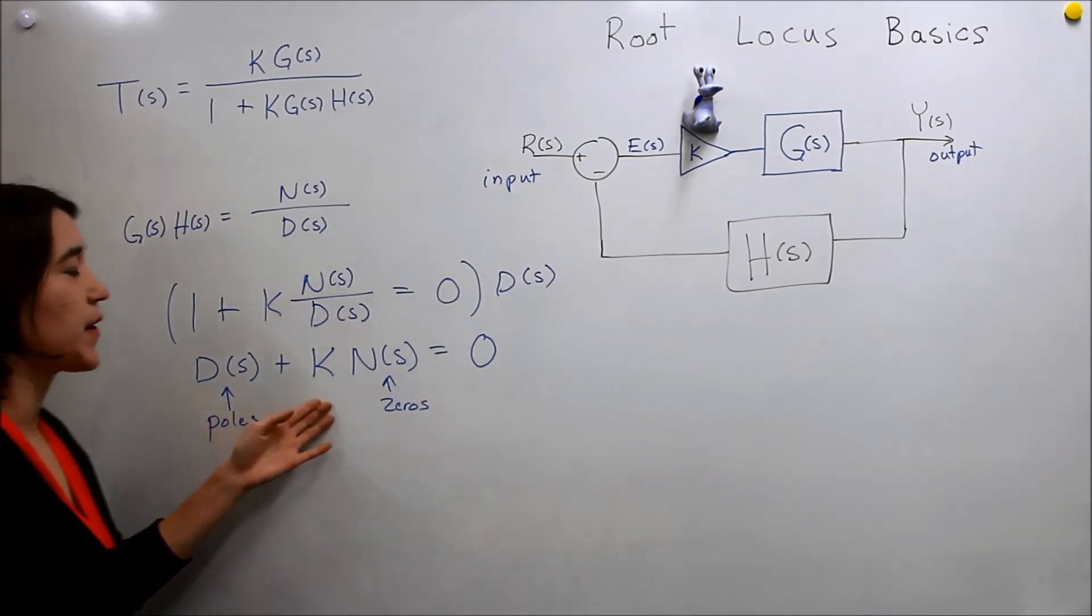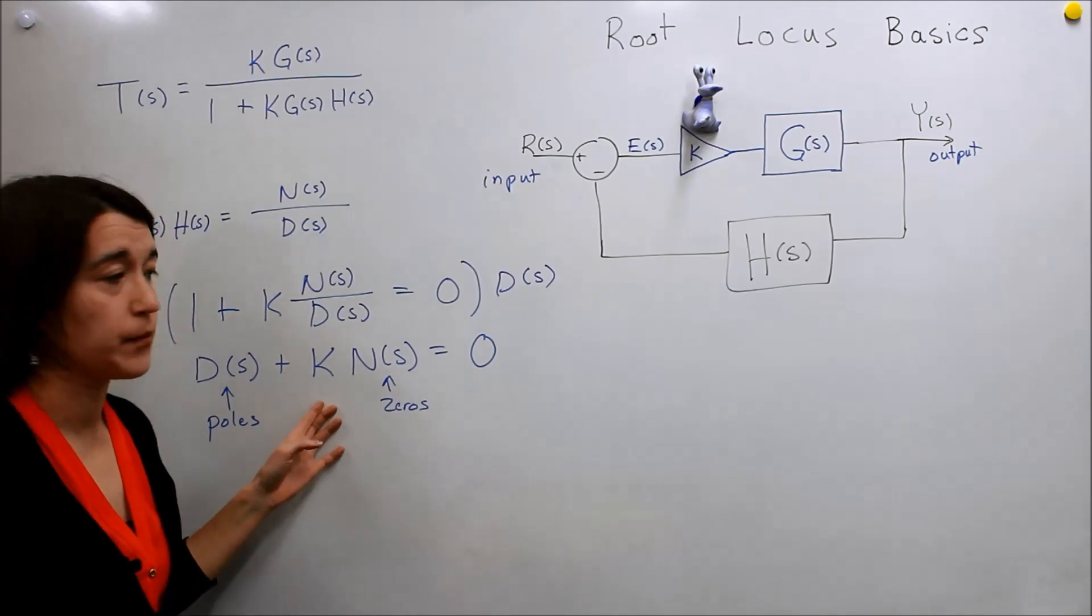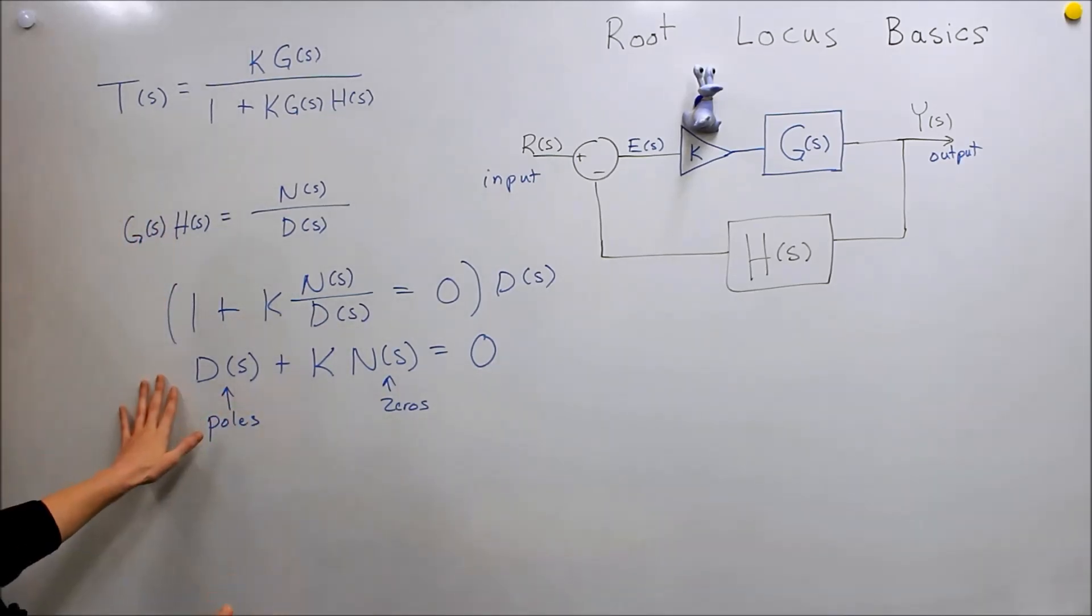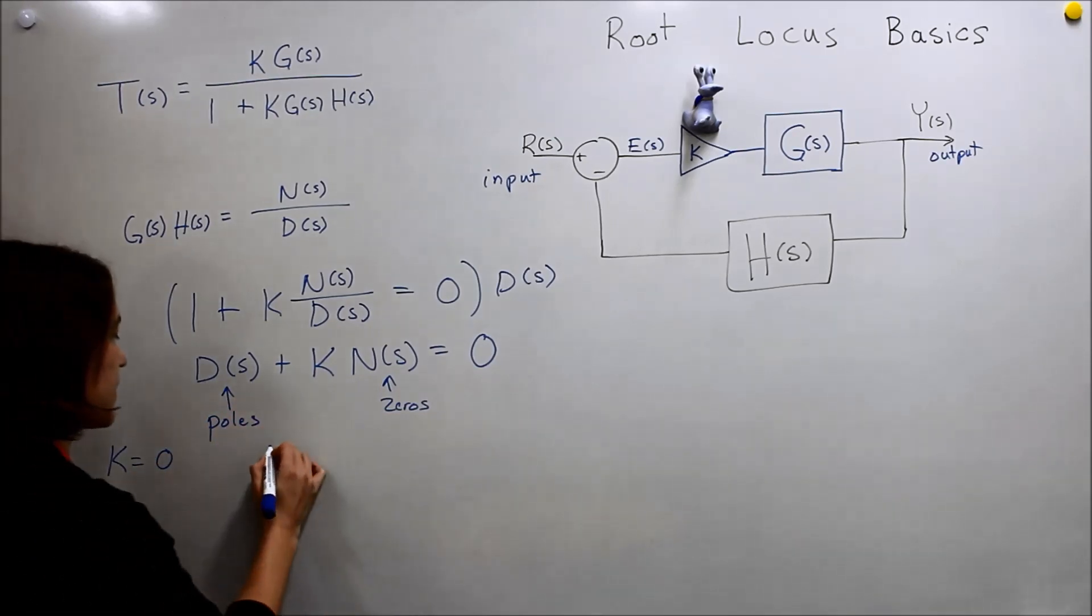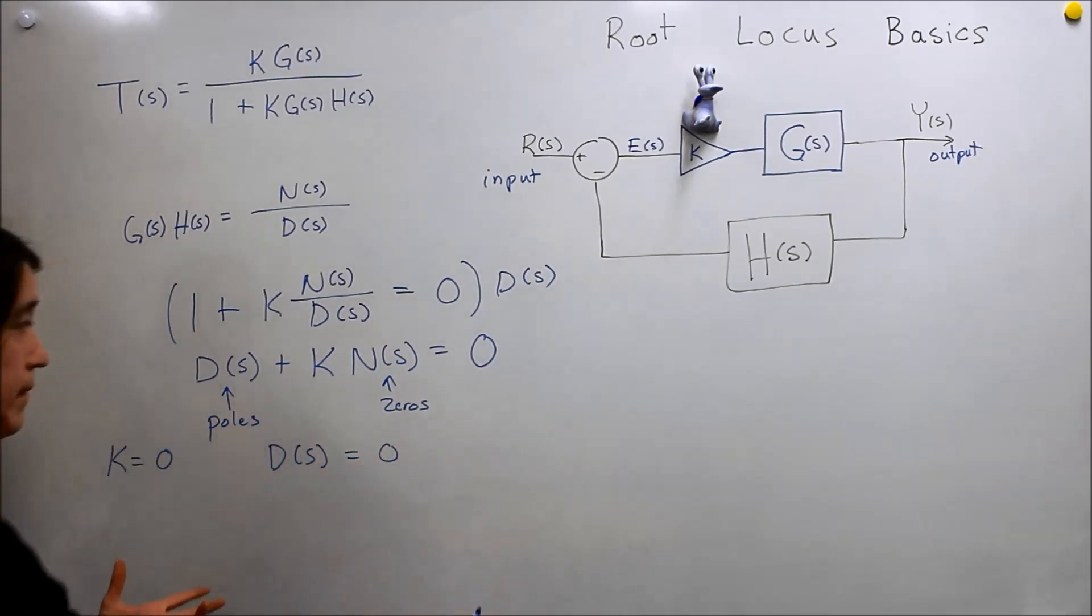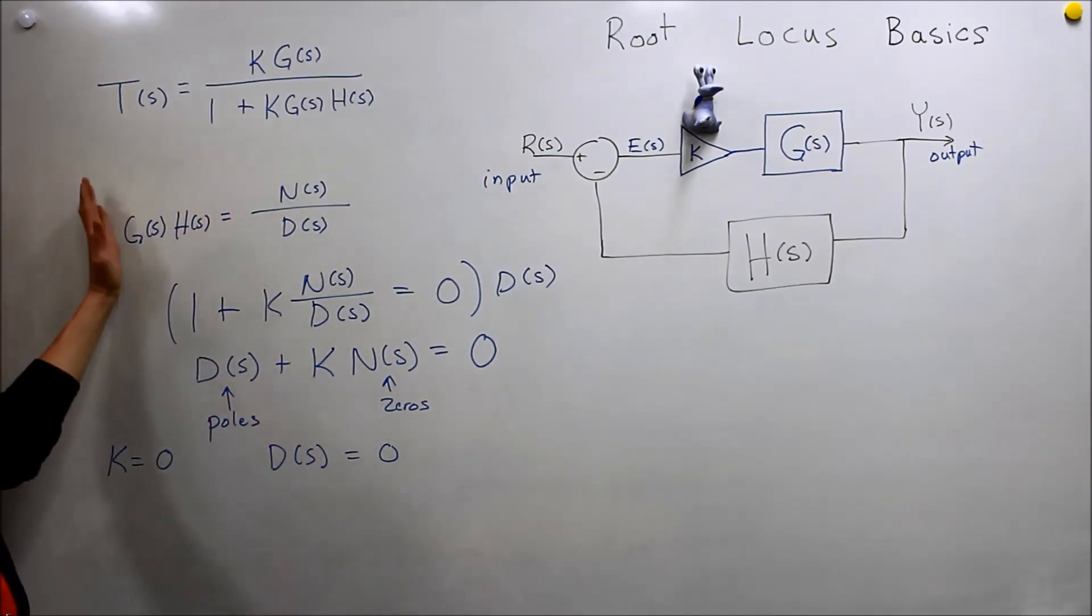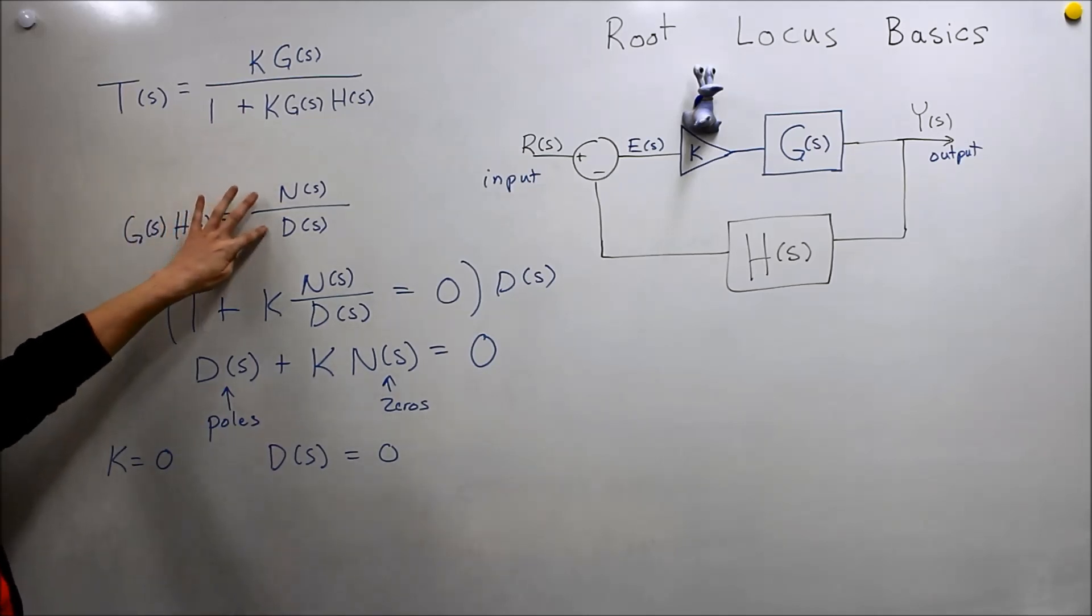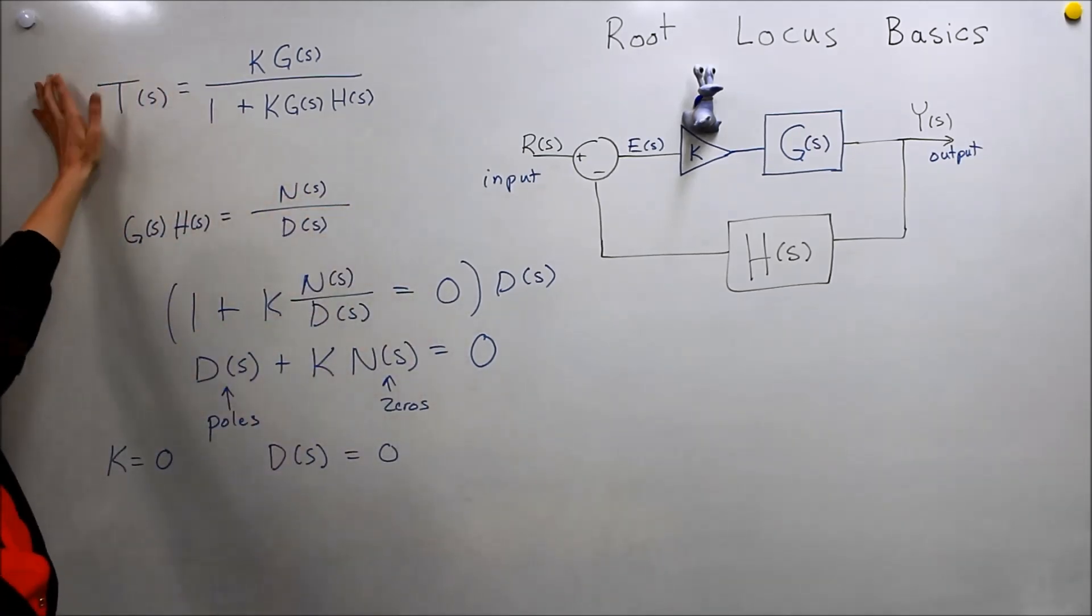What we're going to do is vary K starting from zero into infinity. Look at this equation though. Think for a second, what if K is equal to zero? If K is equal to zero, our expression simply becomes D of S is equal to zero. So the poles of this system, of our G times H, the poles of that system are the poles of our closed-loop system.